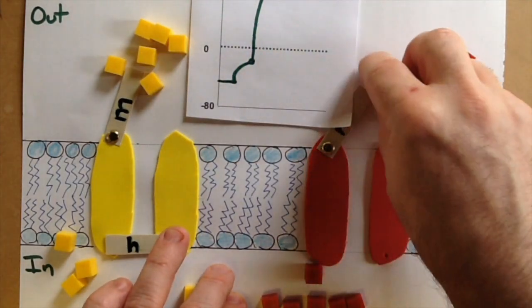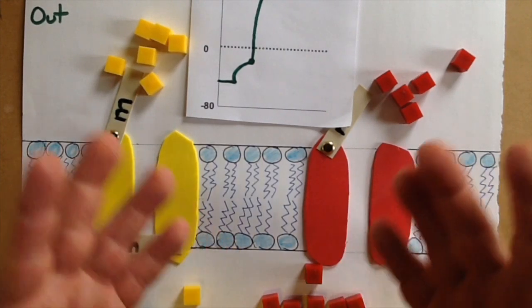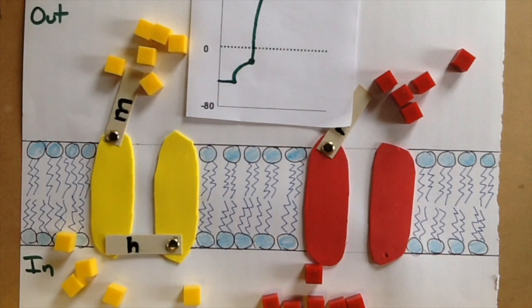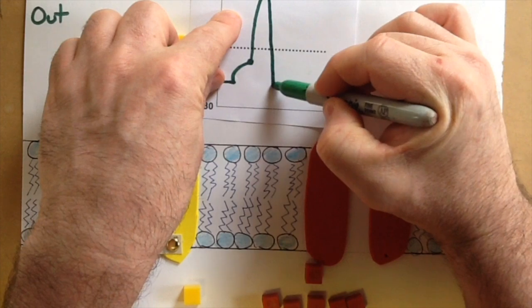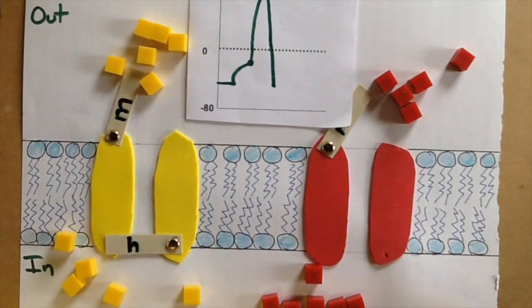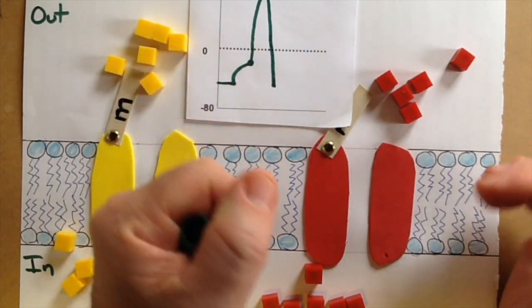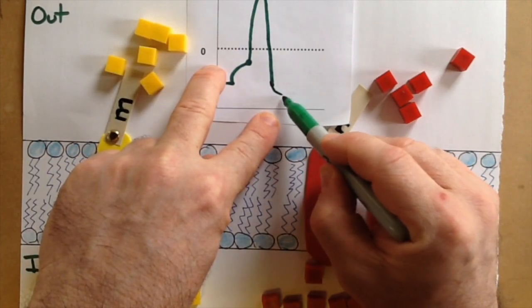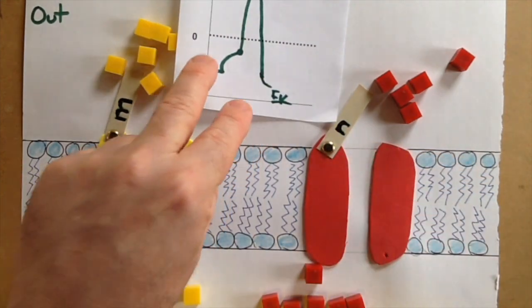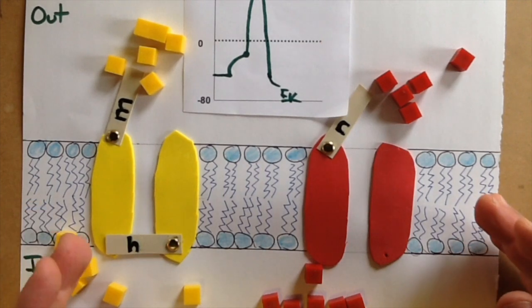Potassium ions start to leave the cell. And of course, as potassium ions leave the cell, the cell becomes more negative. So essentially, the cell will repolarize back to the resting membrane potential. The permeability for potassium through this channel is so high that we pass the resting membrane potential and, in fact, go down to EK. So we can go below the resting membrane potential. This is called hyperpolarization.